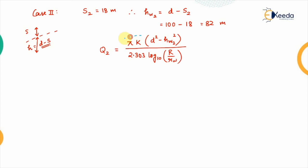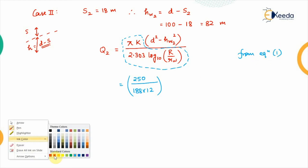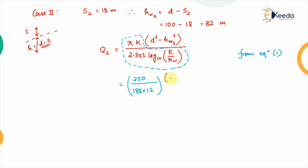From the first equation, we already know the value of the constant pi times k divided by 2.303 log base 10 (R / r_w), which was obtained as 250 divided by (188 times 12). Substituting into the Case 2 equation: d is 100, so d squared is 100 squared, and h_w2 is 82, so h_w2 squared is 82 squared.